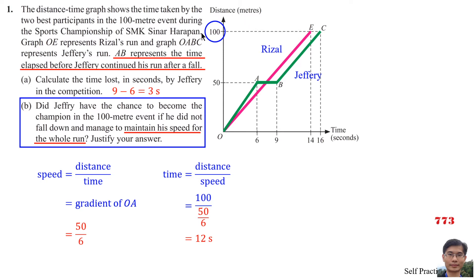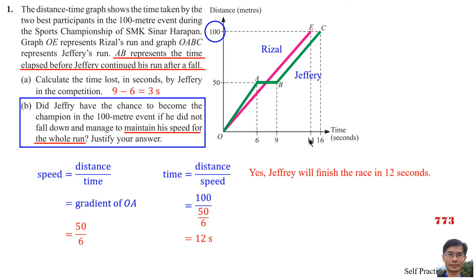If Jeffrey does not stop, he would complete the 100m in 12 seconds, which is less than the recorded time. So Jeffrey would have the chance to become champion if he did not fall.